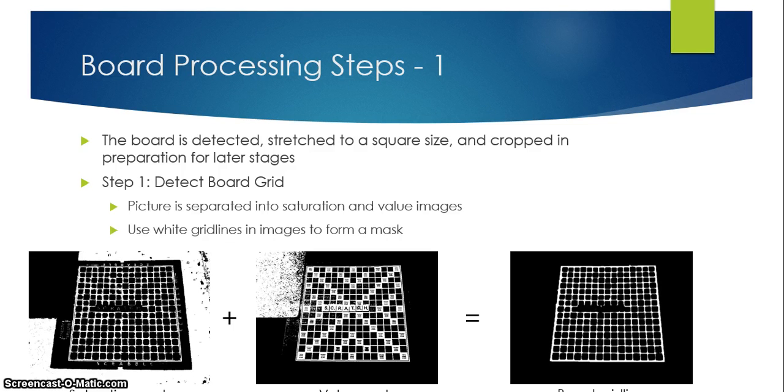To do this there's three different steps. The first step is to detect the board grid. To do this I reduce the image to three different channels: hue, saturation, and value. Then I use the saturation and value images to form the board mask for the grid lines. So you can see here the one on the left is the saturation mask, the one in the middle is the value mask, and the one on the right is the board grid lines that are eventually detected.